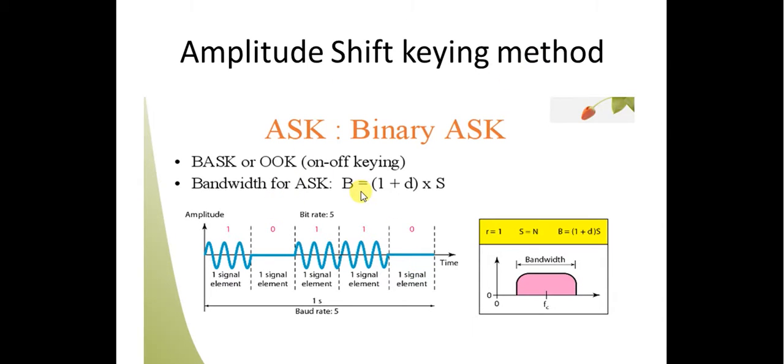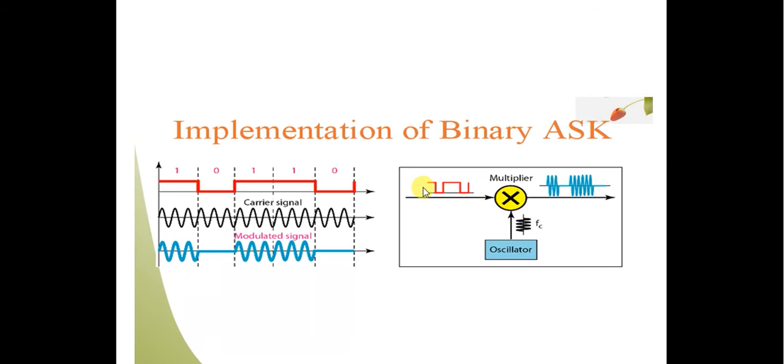For the bandwidth of the Amplitude Shift Keying method, B is equal to (1 + d) times s. Here is the implementation of the binary Amplitude Shift Keying method.